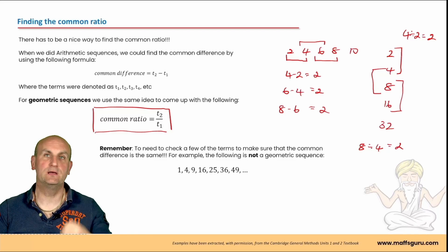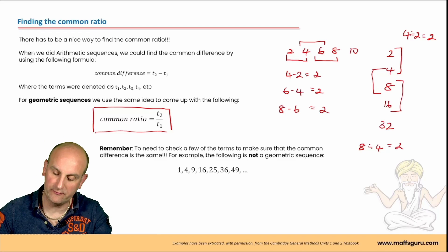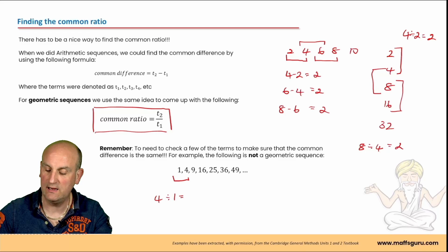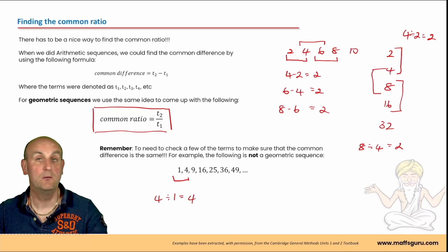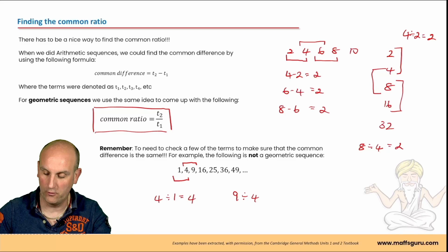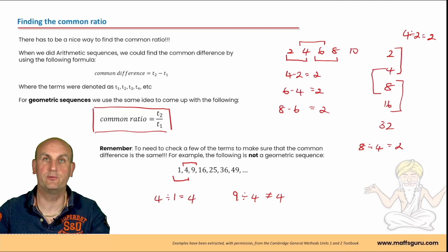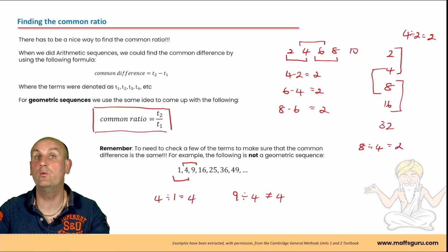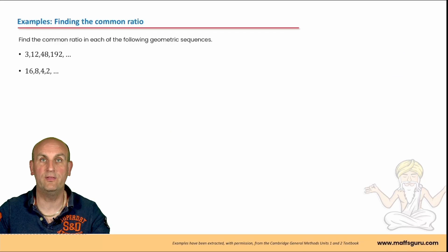In maths we'll try to trick you. If I have the sequence 1, 4... four divided by one gives four — that might look like our common ratio. But I check the next pair: nine divided by four is not equal to four. So that is not a geometric sequence. If you recognise those numbers, they're actually the square numbers.